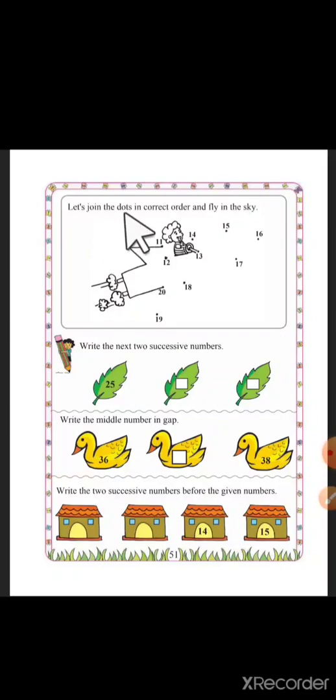Join the dots in correct order and fly in the sky. Number 11 and number 12 after 11, 12 number will come, so join point from 11 to 12.